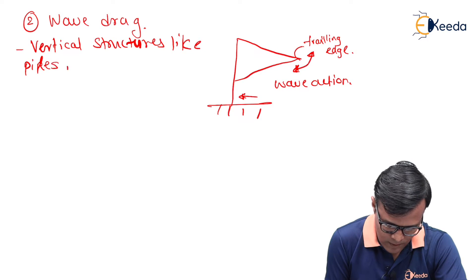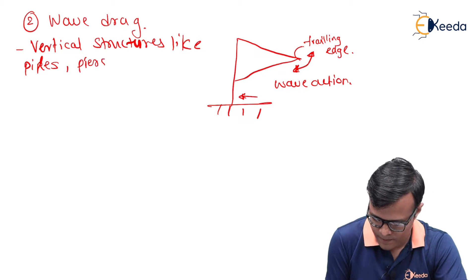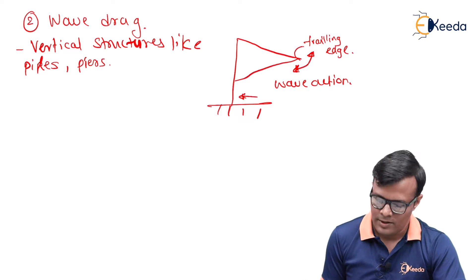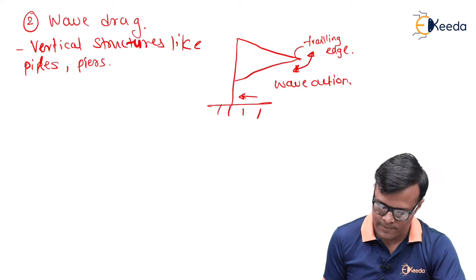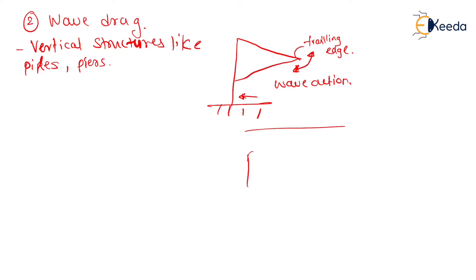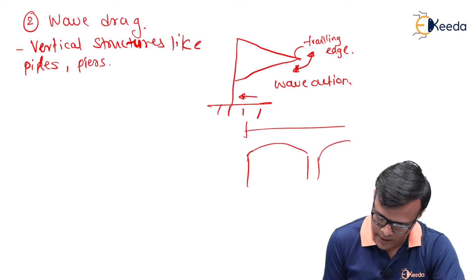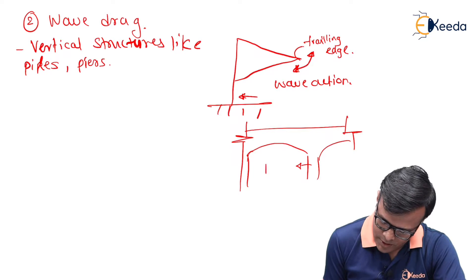Piers are nothing but the supporting structure to the bridges. So if this is the bridge like this, then this supporting structure is called as pier.